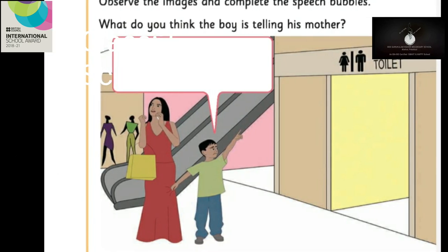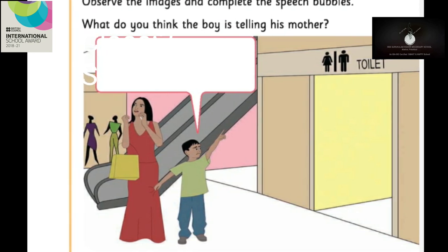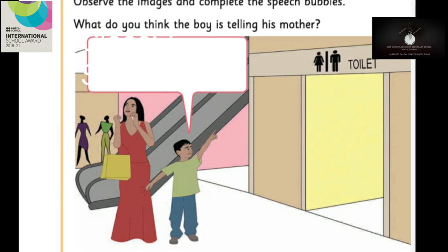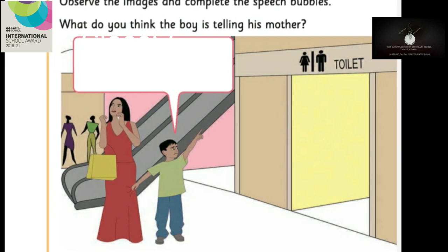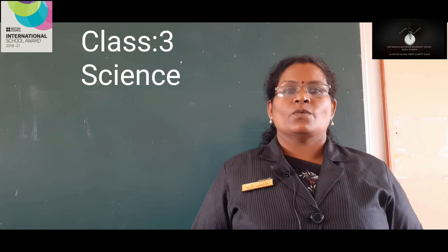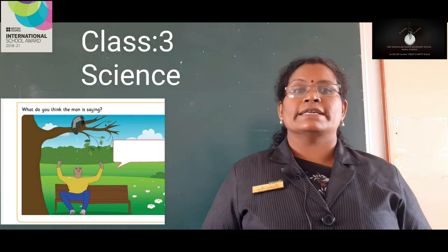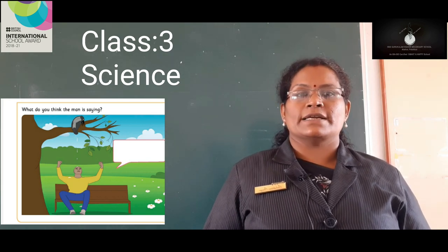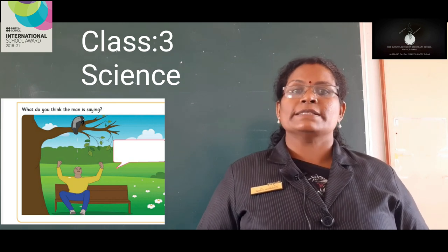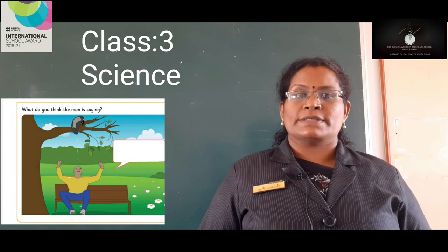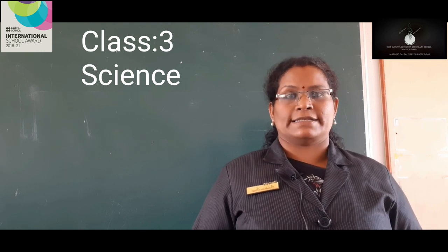See this Activity 1.8 — observe the images and complete the speech bubbles. What do you think the boy is telling his mother? He says that he wants to go to the toilet. Now see this picture — what is the man saying? The man is saying, 'Oh, this crow has dirtied me.' So what has that crow done? Yes, the crow has eliminated its waste from its body. So children, the process of eliminating waste from our body is known as excretion.